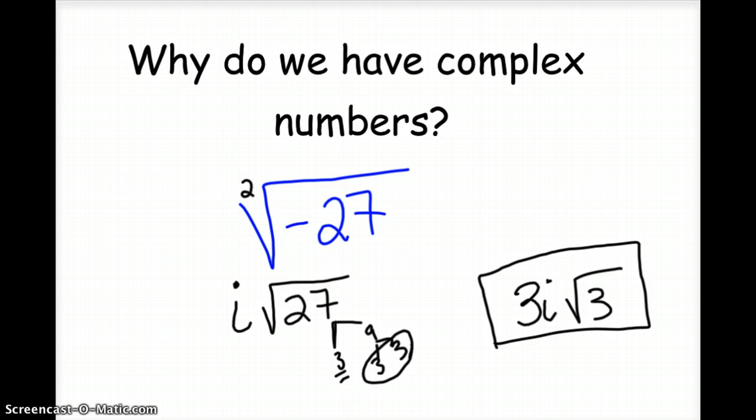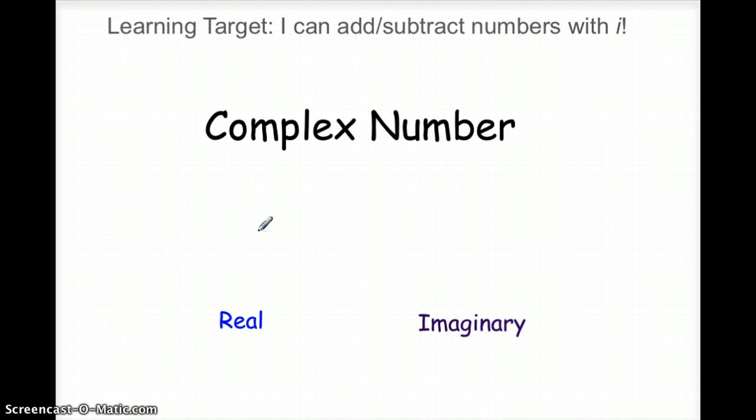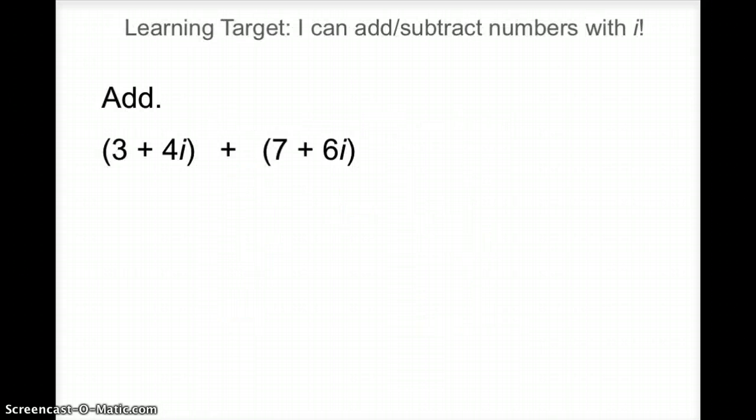And that's how we take care of them, by taking the i out. So a complex number has a general form, a plus bi, where you have a real part, and then you have an imaginary part. Obviously the imaginary part is denoted by an i. So what we're going to be looking at is how do you add these numbers, these complex numbers, that have real and imaginary parts.